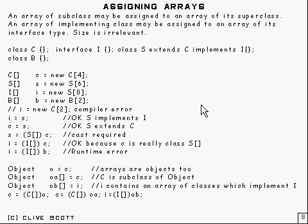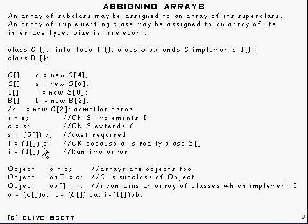Now if you want to go down this tree of classes, you're going to need a cast. So you can't say s equals c because it's going down the tree — you're going to need to put a cast in. And that's how you do a cast for an array. Similarly, in this case it will work because c contains s, and s implements i, so that will work as well.